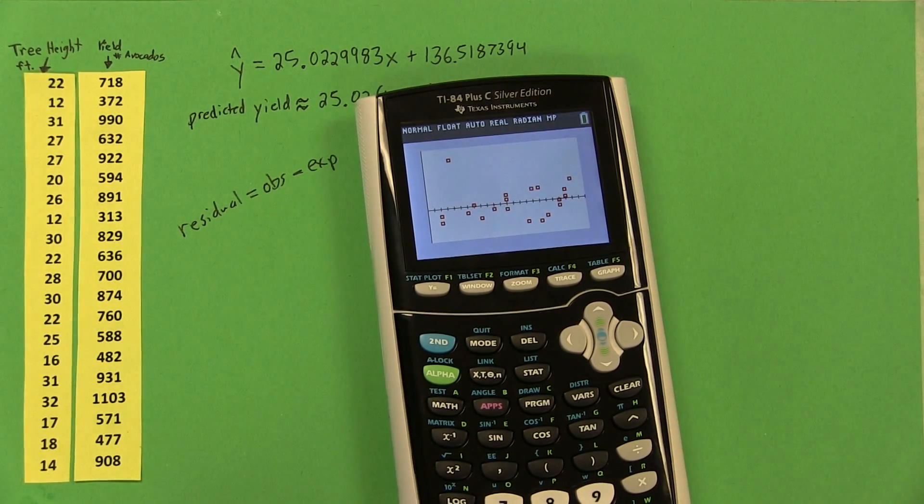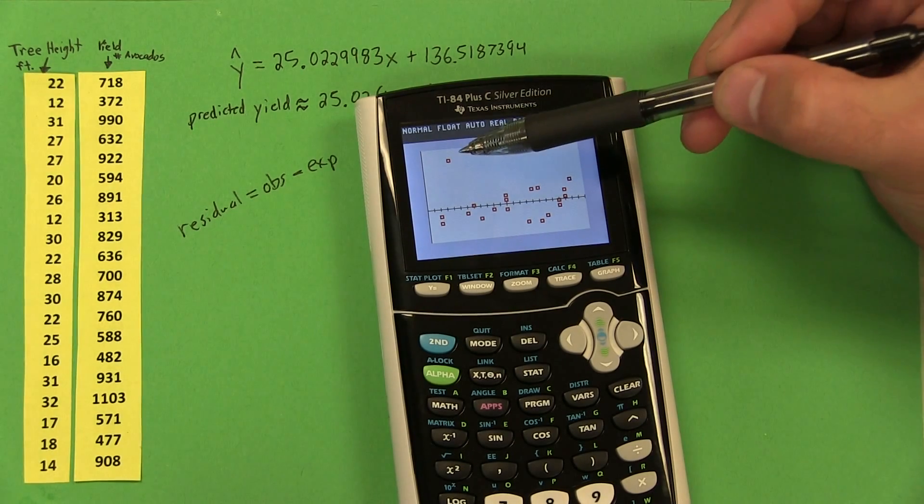Points that are very close to the X axis here represent trees that our model did a great job predicting yield for. Points far away from the plot, like that one, represent places where our model failed.